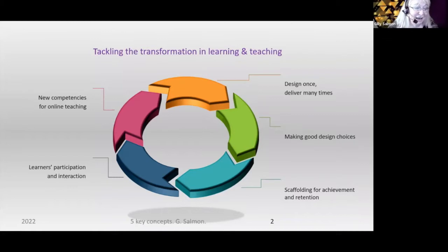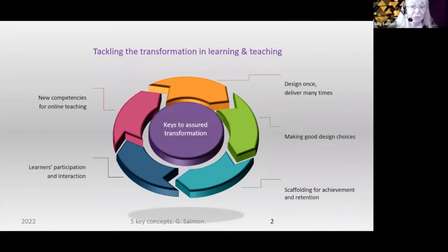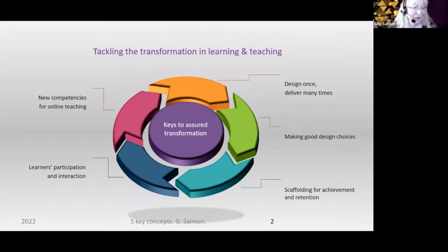Just to say, it is of course a complex adaptive system, so they do actually move around with each other. But if you can't tackle them all at once, at least choose one out of what I'm suggesting and then get started on the others. But it does shift quite quickly.